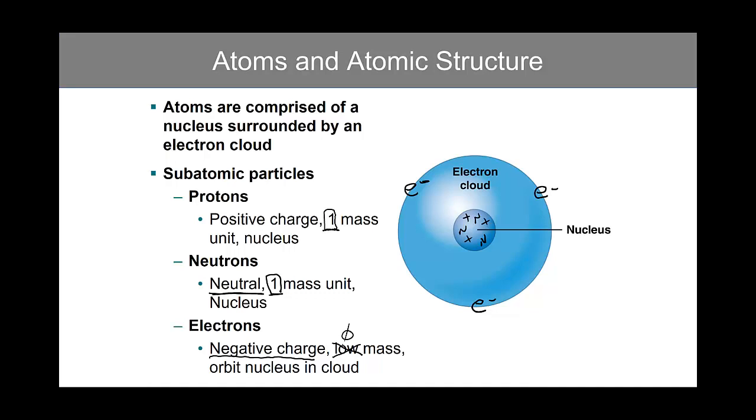Protons and neutrons are found within the nucleus of an atom and electrons are found orbiting the nucleus within the electron cloud.